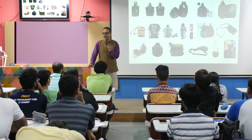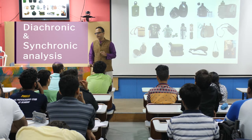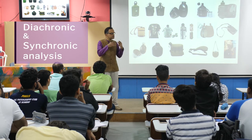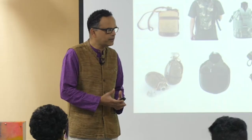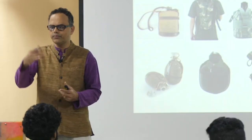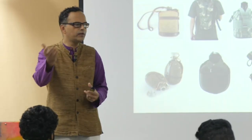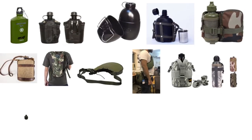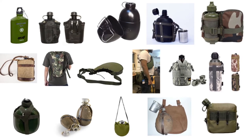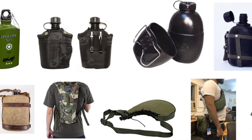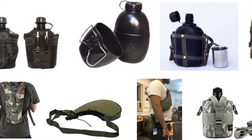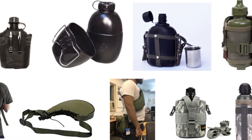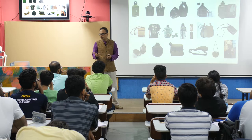In the design process you do diachronic and synchronic analysis — you look at all similar products in the market and also all other products which will help you in understanding this. Here you see a lot of bottles available in the market. These are the specialized bottles we need to study: we take all the interesting cues from existing bottles, from their lids, from their materials, and check how we can learn.